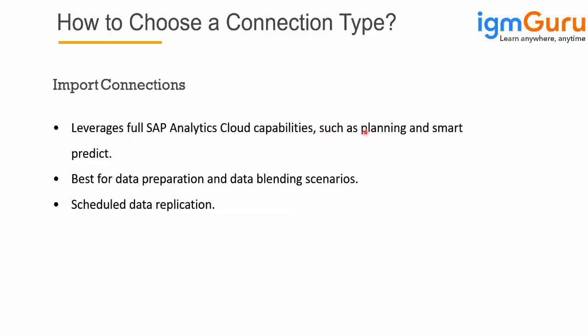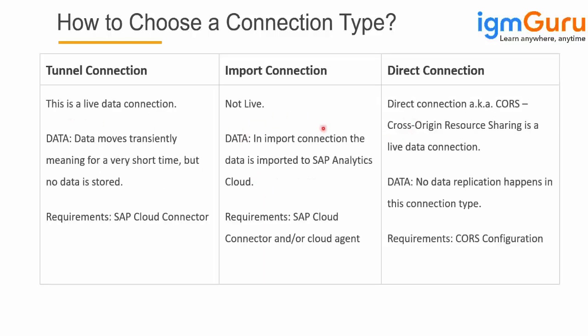Import connections are used for planning and Smart Predict functionalities. They are best for data preparation and data planning scenarios, and they allow you to copy data. Importantly, data wrangling and data transformation in SAC — such as changing columns, merging columns, or concatenation — are supported only for import connections. In live connections, these transformations are not supported because it is expected that all data modeling is done in the source system.